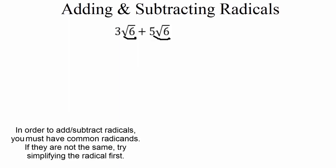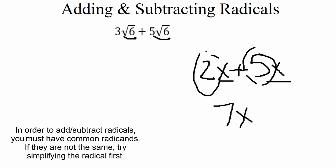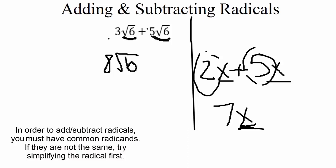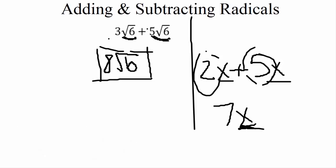Here's an example that already has the same radical: 3 square roots of 6 plus 5 square roots of 6. Think back to combining like terms — to combine like terms they have to be the exact same variable. 2x plus 5x gives us 7x; we add the coefficients and keep the variable. The same applies here: 3 plus 5 gives us 8, and we keep the square root of 6. So 3√6 + 5√6 = 8√6.